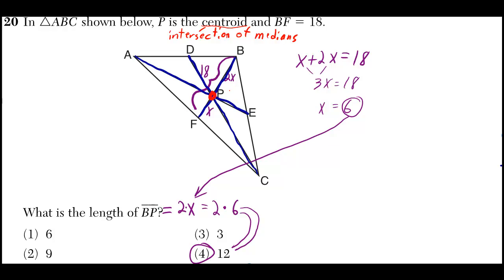And you can also prove that that point splits any median up into two pieces, one of which is double the size of the other. So I've labeled one of them x, and the other one 2x.